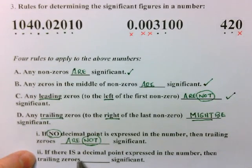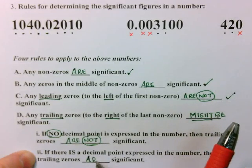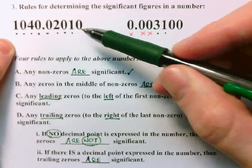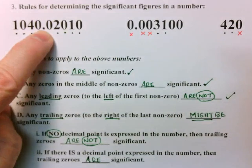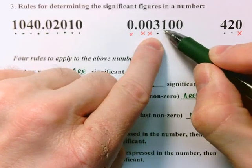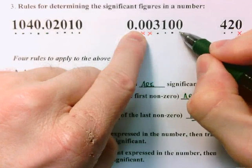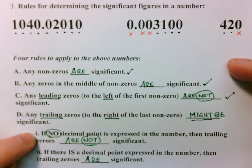The second sub-rule for trailing zeros: if a trailing zero is to the right of the last non-zero and there is a decimal point expressed in the number, then the trailing zeros are significant. Here is a trailing zero to the right of the last non-zero, and there is a decimal point in the number, so this zero is significant. Similarly, over here we have trailing zeros to the right of the last non-zero, and there is a decimal point in the number — therefore these are significant figures. So those are the four basic rules, with rule D having two sub-rules.